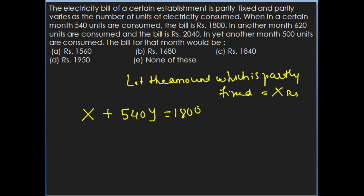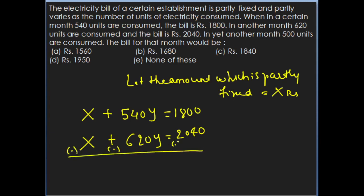Subtracting the first equation from the second, X cancels out. You get 620 minus 540 which is 80Y equals 2040 minus 1800 which is 240. So Y equals 240 upon 80 equals 3. Substituting Y equals 3 back into the first equation to find X: X plus 540 into 3 equals 1800, so X plus 1620 equals 1800, giving X equals 180.